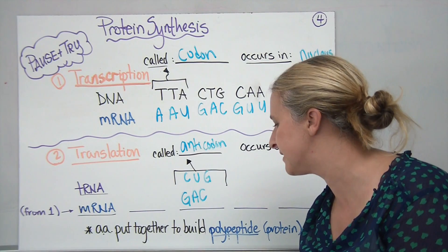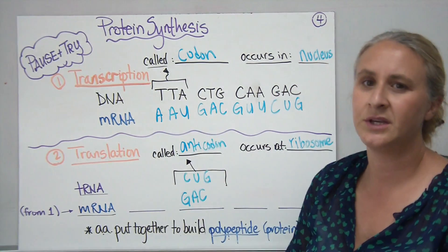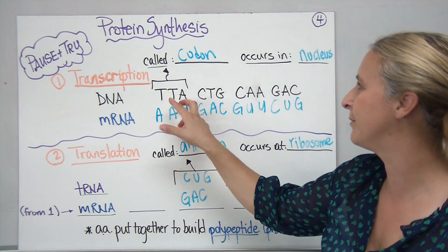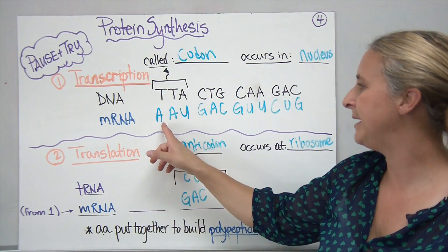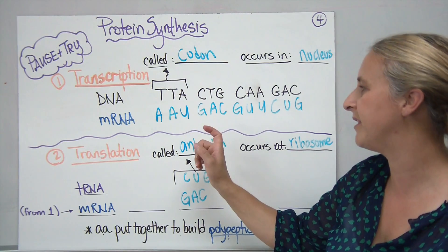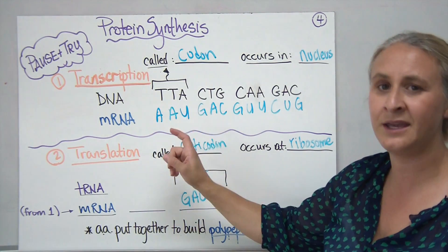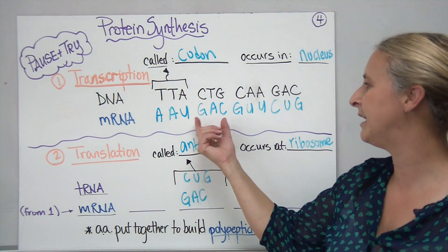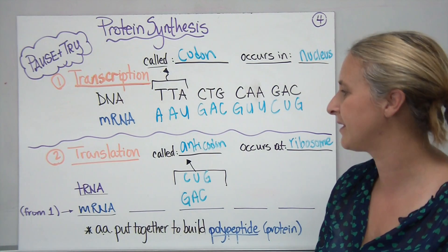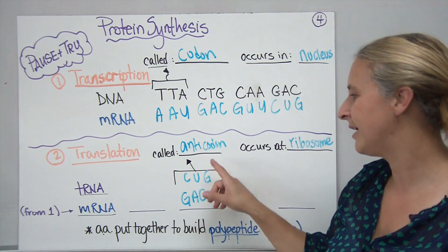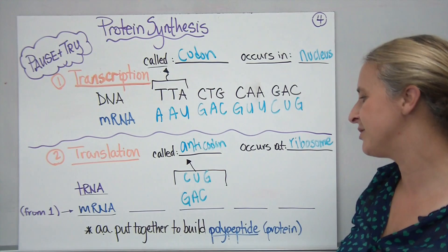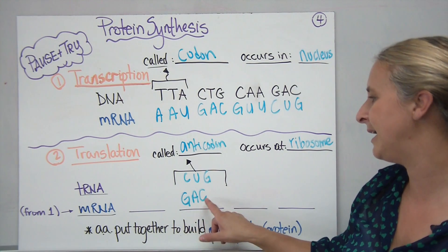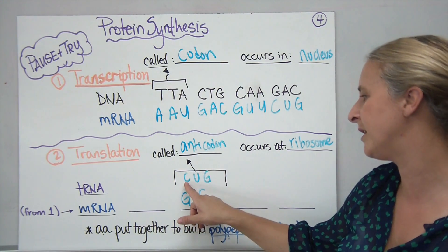So we had two steps in protein synthesis. The first step, transcription, starts with DNA — for example, a codon TTA, which is three letters at a time — and this occurs in the nucleus. On the messenger RNA, special codons pair up following base pairing rules, so TTA on DNA gives AAU on the messenger RNA. The second step, translation, has anticodons on the transfer RNA reading the messenger RNA strand. For example, a codon GAC on mRNA would be read with the complementary anticodon CUG on tRNA. This step occurs at the ribosome.